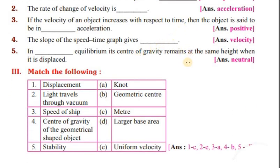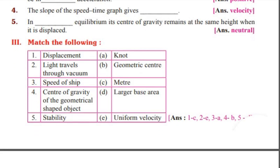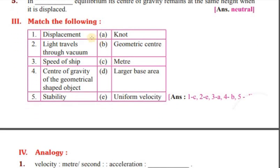In neutral equilibrium, its center of gravity remains at the same height when it is displaced. The unit of displacement is meter. Light travels through vacuum at uniform velocity — that is the speed of light. The center of gravity of a geometrically shaped object is its geometric center.